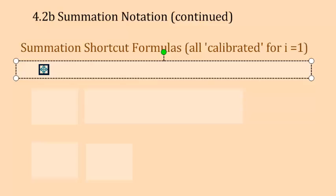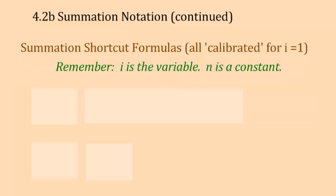Another thing to remember: i is a variable in these problems. i is always changing. You plug in one, you plug in two, you plug in three. i is changing on every term. n, however, that's just your upper limit. That is a constant. If the problem says the upper limit is 42, then it's 42 for the whole problem. That doesn't change.